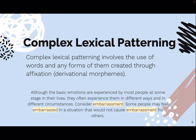Complex lexical patterning involves the use of words and any forms of those root words created through affixation, particularly derivational morphemes. For example, in this paragraph: 'although the basic emotions are experienced by most people at some stage in their lives, they often experience them in different ways and in different circumstances — consider embarrassment; some people may feel embarrassed in a situation that would not cause embarrassment for others.' Here we have 'embarrassment' as a noun and 'embarrassed' as an adjective — a different word class — which is what makes it complex lexical patterning.